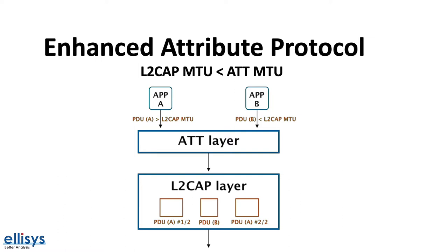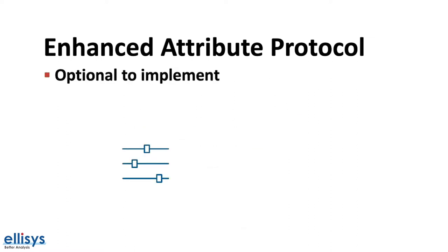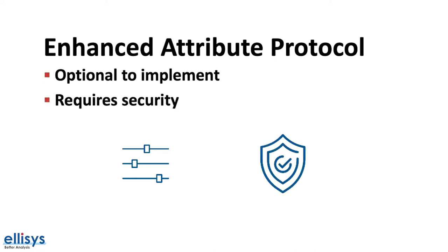The last couple of things to mention is that the enhanced attribute protocol is optional per the specification, and that it requires encryption of the connection between two Bluetooth Low Energy devices, which makes it inherently more secure than the original unenhanced attribute protocol.